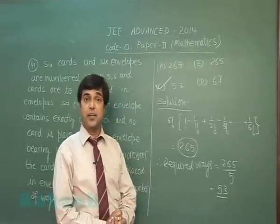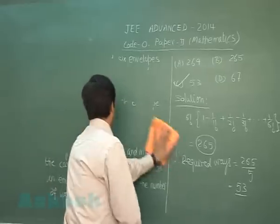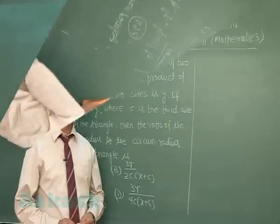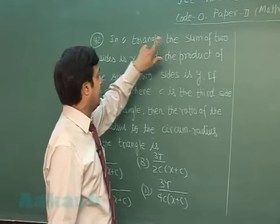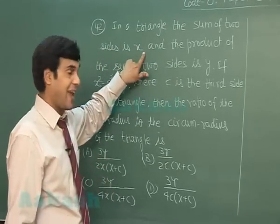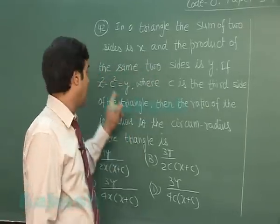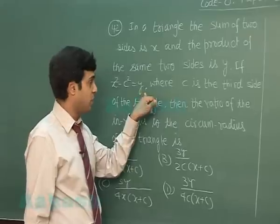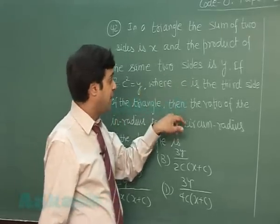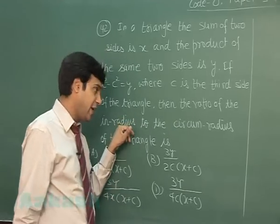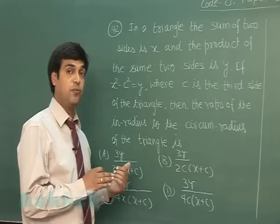Let's move to the next question, that is Question Number 42. In a triangle, the sum of two sides is X and the product of the same two sides is Y. If X square minus C square equals Y, where C is the third side of the triangle, then the ratio of the inradius to the circumradius of the triangle is...